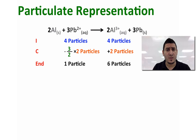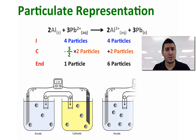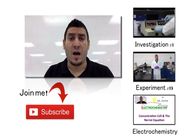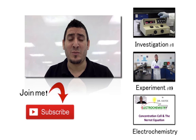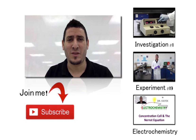So initially we had 4 particles in each compartment and the cell potential was 1.53 volts. At the end we will have 6 particles of aluminum, 1 particle of lead, and the cell potential is equal to 1.51 volts. I hope this video is helpful to you. Please like, share, and subscribe, and I will see you next time.